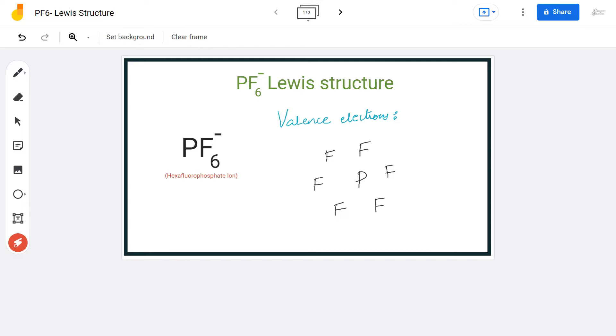Hi guys, welcome back to our channel. In today's video, we are going to help you with PF6 minus ion's Lewis structure. This is the chemical formula of hexafluorophosphate ion because there are six fluorine atoms. The term hexa is used. To determine its Lewis structure, we will first need to look at the total number of valence electrons.